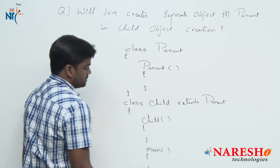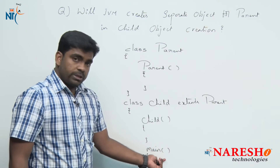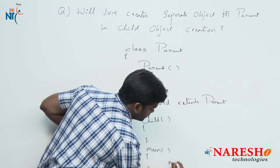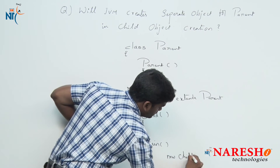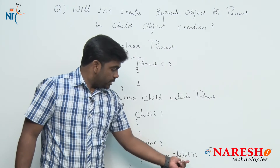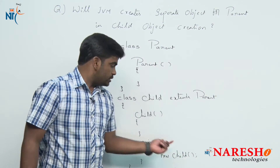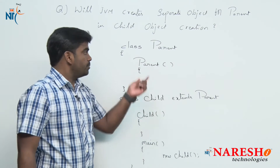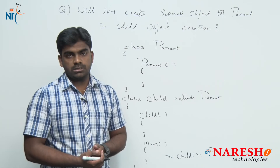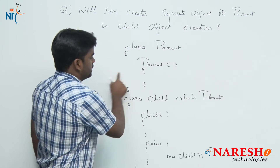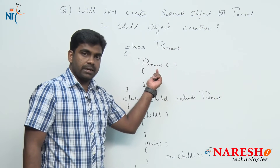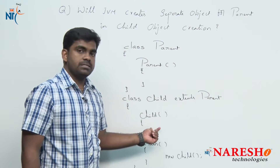I am not taking a separate class. Suppose if you create an object for the child class, in this process we are creating an object for the child class. But whenever you are calling the child class constructor, first the parent class constructor will be called automatically — we know that super method concept. Control comes here first, it will check the parent class constructor and then it will check the child class constructor.